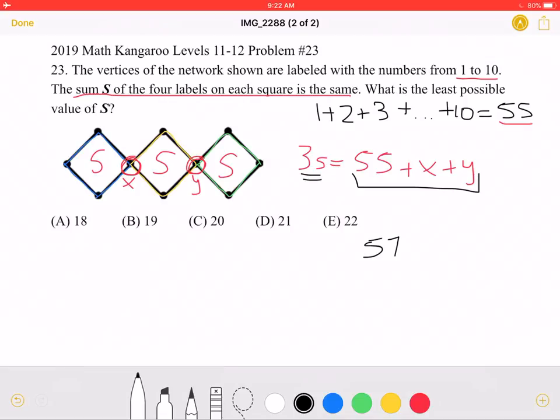However, if 55 plus x plus y is equal to 57, then x plus y would be equal to 2, meaning both x and y are 1. And that cannot be true, because they must be different numbers. So it's not 57.